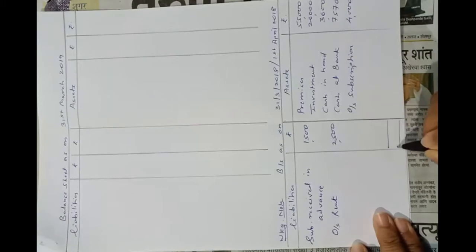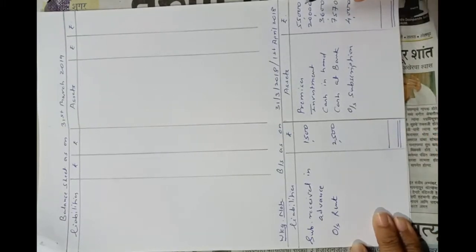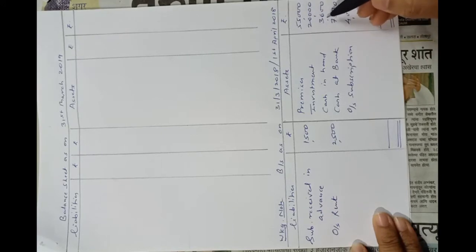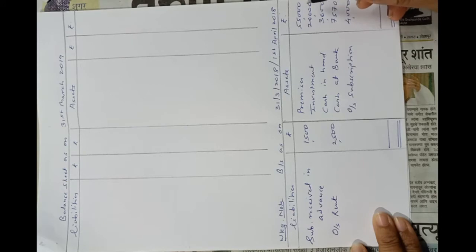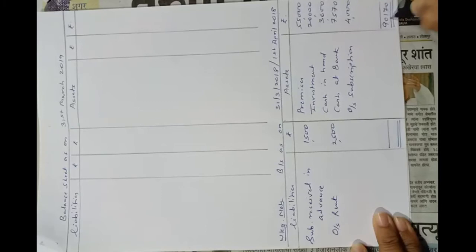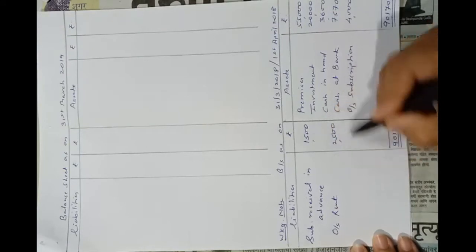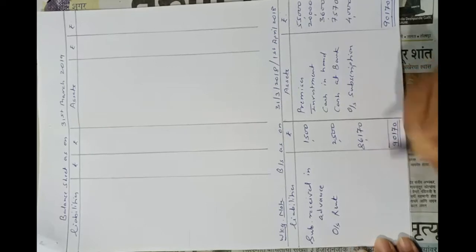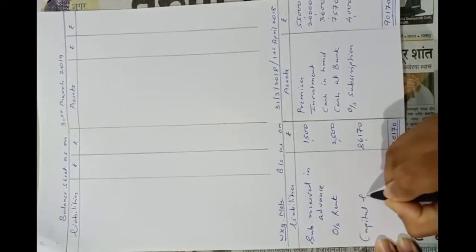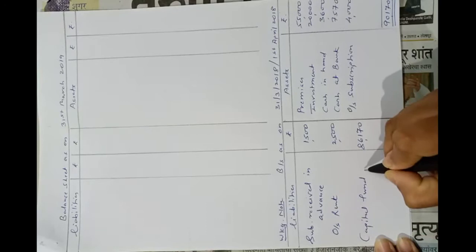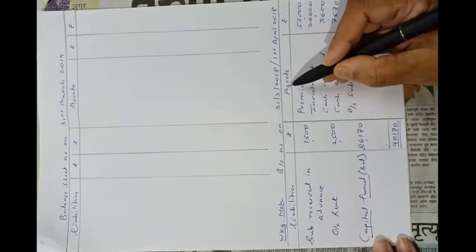We will tally: total of asset side is Rs.90,170. Out of that we deduct Rs.4,000 — that is the total of liability side — so we get Rs.86,170. This is the capital fund — the balancing figure.